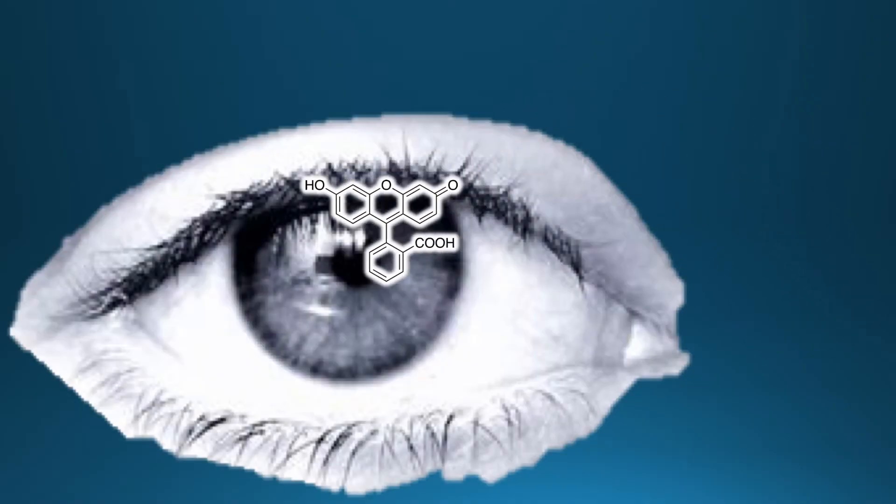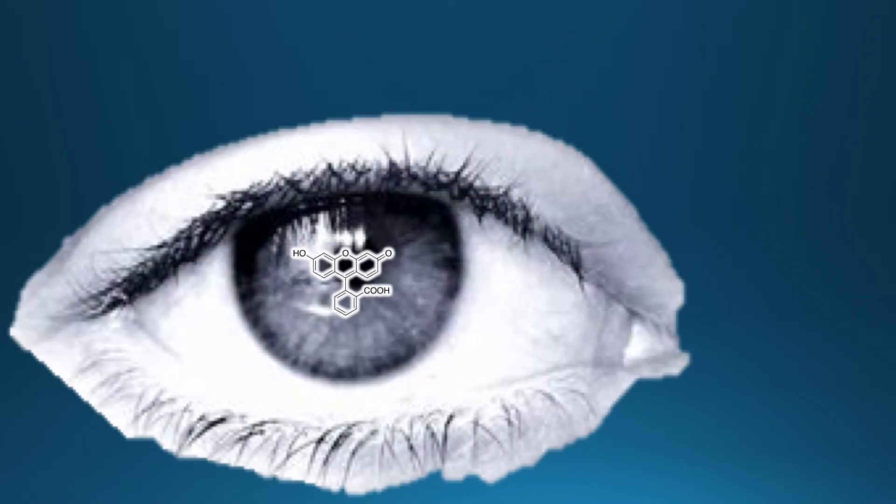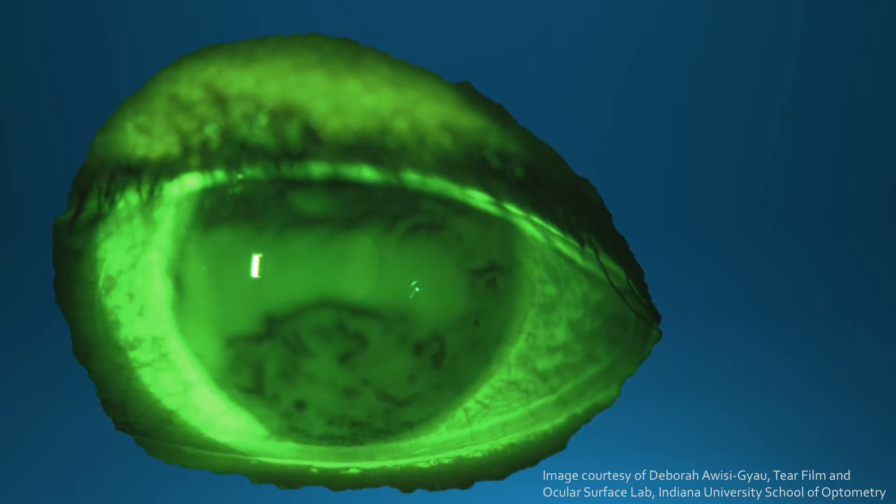Optometrists instill sodium fluorescein into patients' eyes and then image them in order to see characteristics of TBU instances, such as how fast they form and what shape they are.